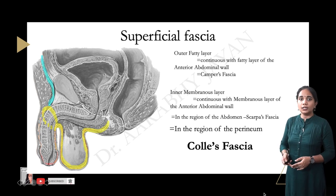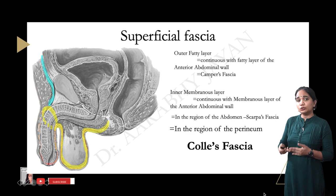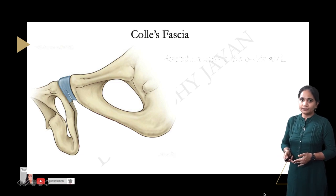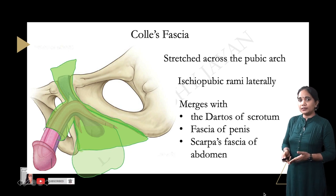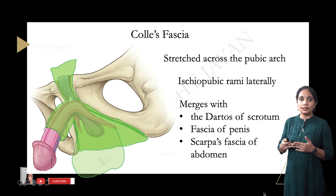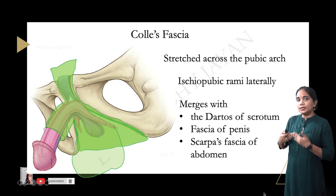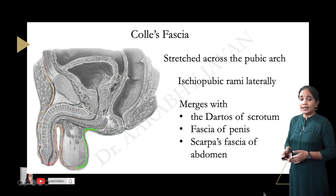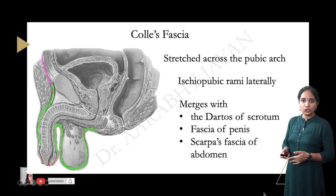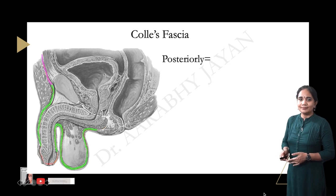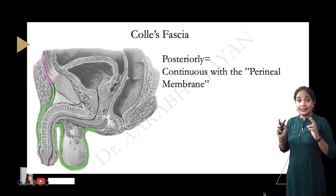Colles' fascia is the membranous layer of the superficial fascia in the region of the perineum. It is stretched across the pubic arch but is not attached to it; instead it is attached to either side of the ischiopubic ramus. It merges with the dartos of the scrotum and the penile fascia, and continues up into the anterior abdominal wall as Scarpa's fascia. Posteriorly, Colles' fascia fuses with the perineal membrane.